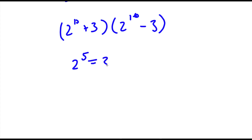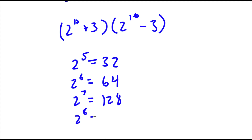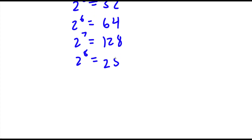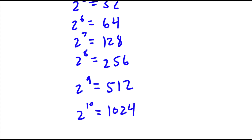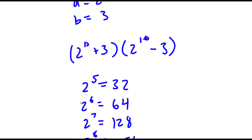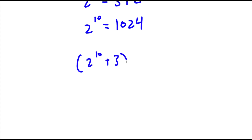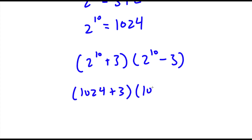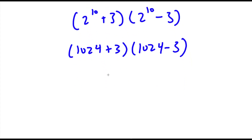Now 2 to the power of 5 is 32, 2 to the power of 6 is 64, 2 to the power of 7 is 128, 2 to the power of 8 is 256, 2 to the power of 9 is 512, and 2 to the power of 10 is 1024. So now I have 1024 plus 3 times 1024 minus 3. Now 1024 plus 3 is 1027, and 1024 minus 3 is 1021. So I have 1027 times 1021.